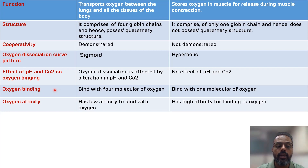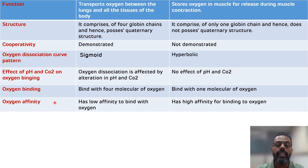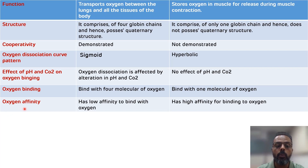Another difference is related to oxygen binding capacity. One molecule of hemoglobin will bind to four molecules of oxygen, while one molecule of myoglobin will bind to only one molecule of oxygen. The last difference is related to oxygen affinity: hemoglobin shows low affinity for binding with oxygen, while myoglobin shows high affinity for binding to oxygen.